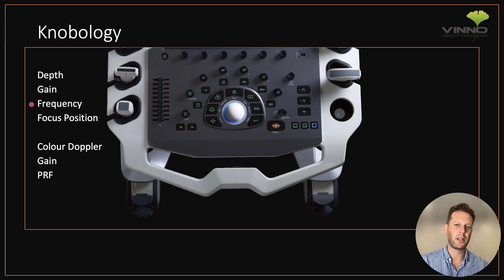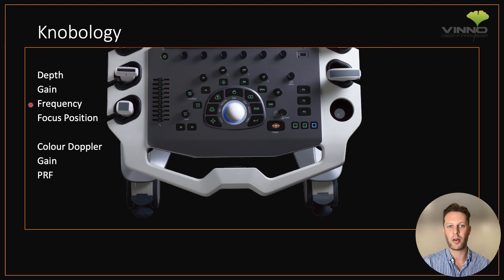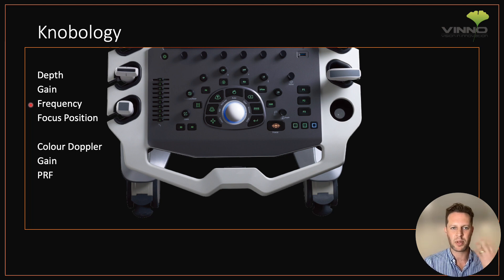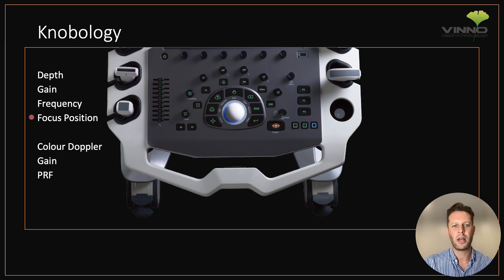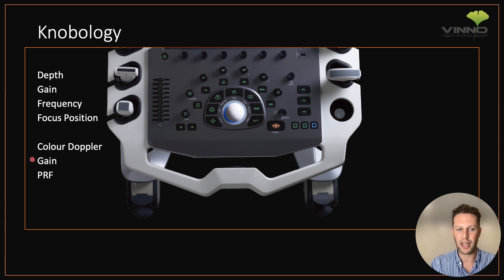All of these probes have an adjustable frequency to some extent. You can increase your frequency to try to get a higher resolution image, or decrease your frequency if you need better penetration — for example, if you need to image something deeper like the masseter muscle. You can also adjust the focus position on most ultrasound machines, so that a particular part of the image is the clearest. In terms of colour Doppler, you can adjust the gain to control the brightness of the colour signal.